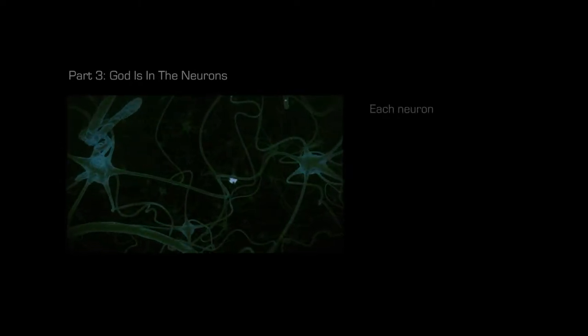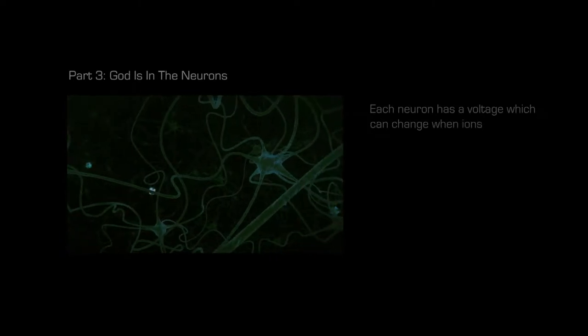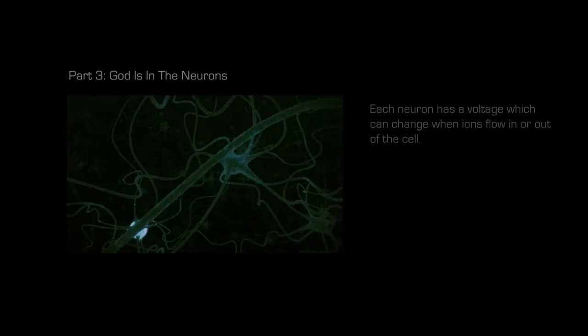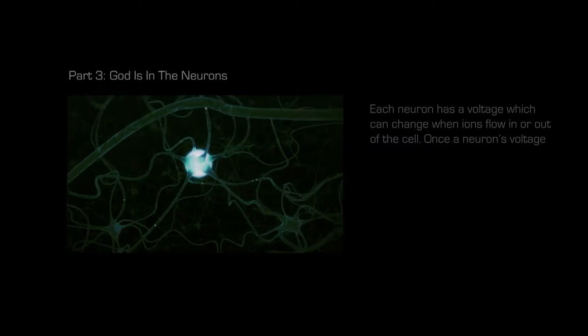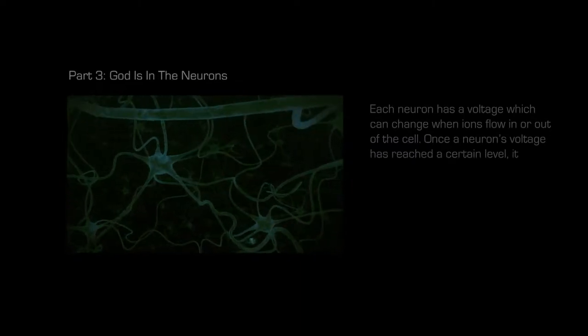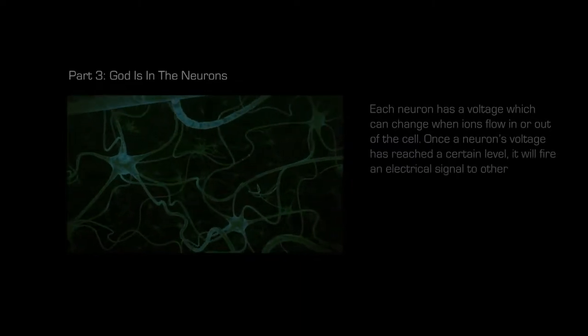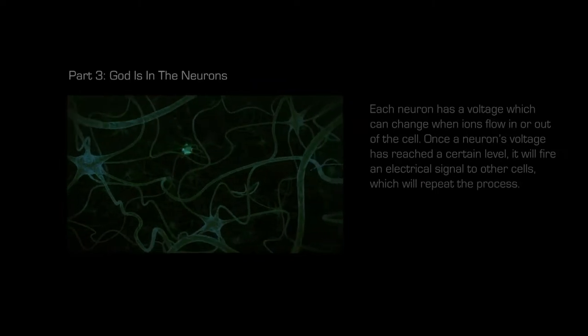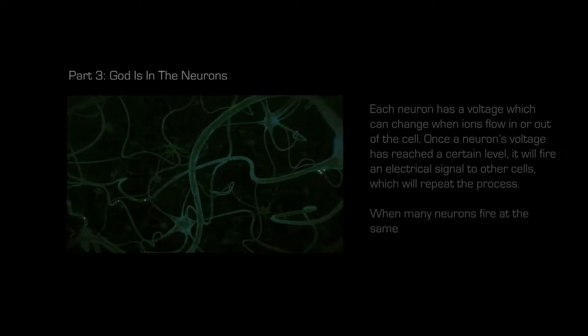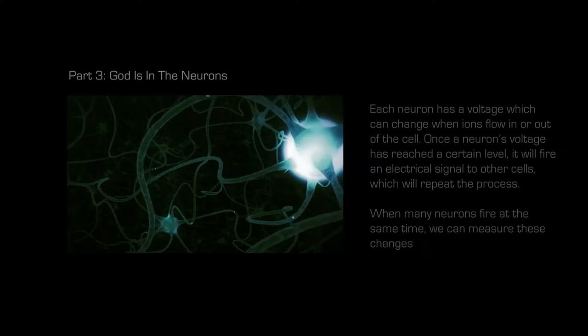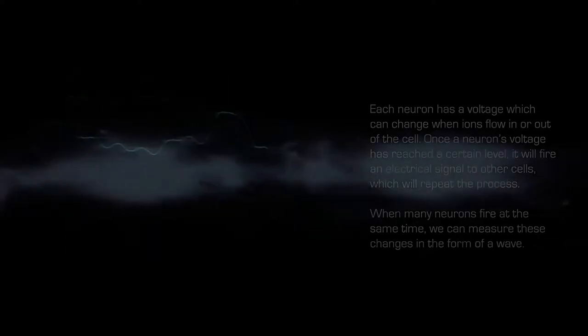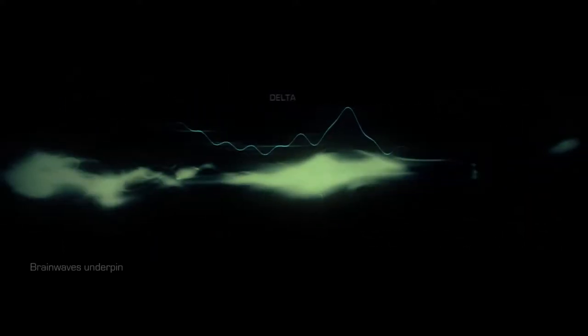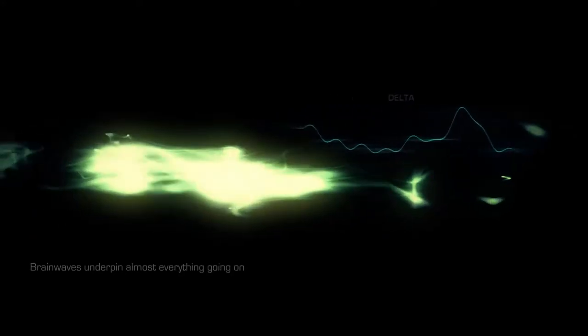Each neuron has a voltage, which can change when ions flow in or out of the cell. Once a neuron's voltage has reached a certain level, it will fire an electrical signal to other cells, which will repeat the process. When many neurons fire at the same time, we can measure these changes in the form of a wave. Brain waves underpin almost everything going on in our minds, including memory, attention, and even intelligence.